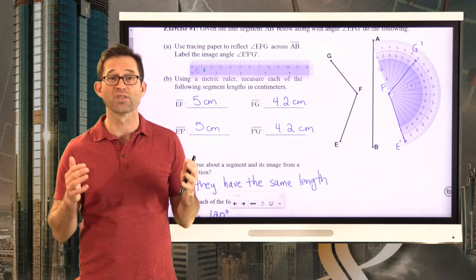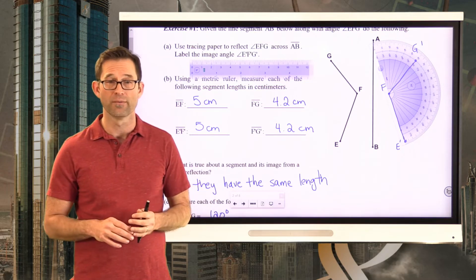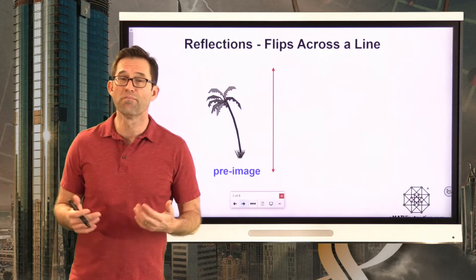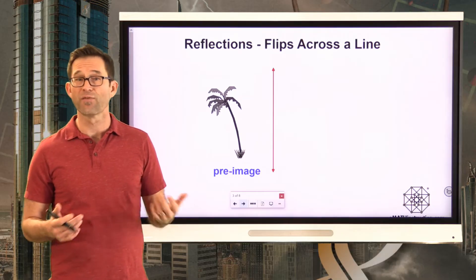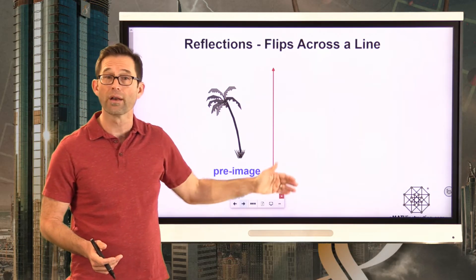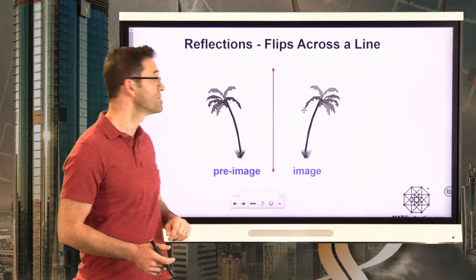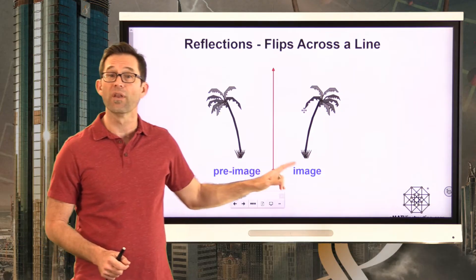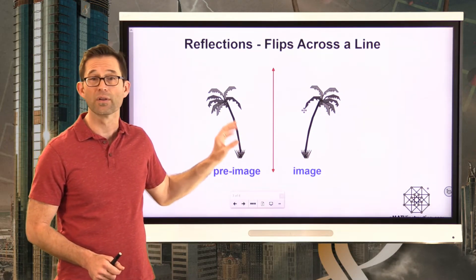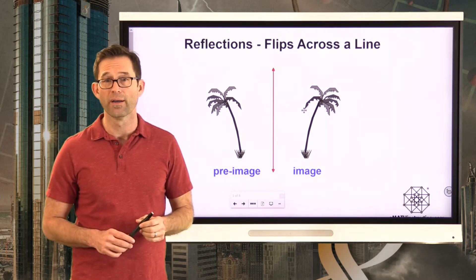A reflection is an example of a transformation that is a rigid motion — it doesn't change the size or shape of the object. Reflections are also known as flips. We always flip the object across a line of reflection, ending up with an image that is congruent to the pre-image.